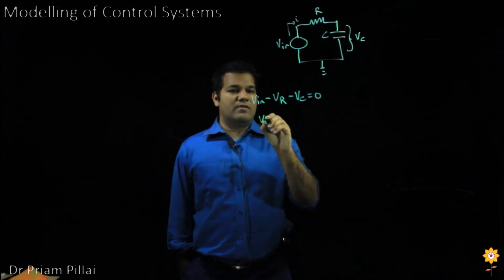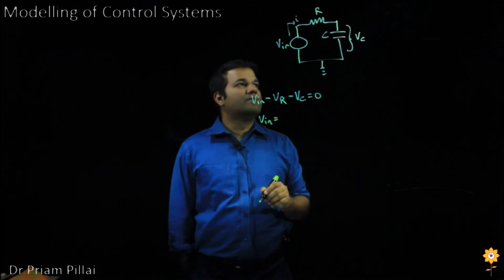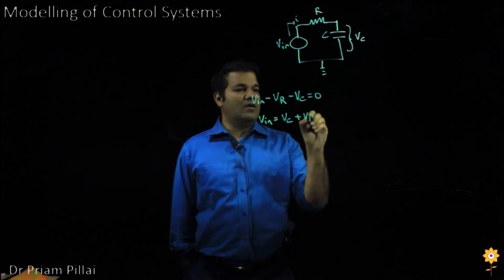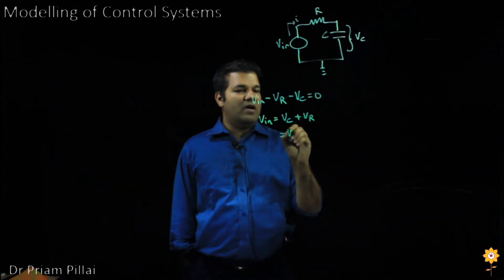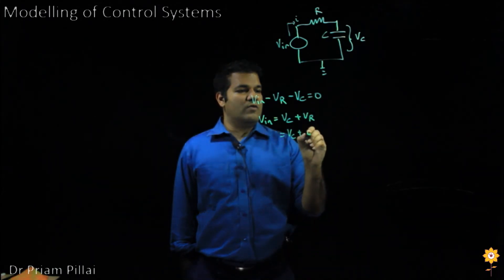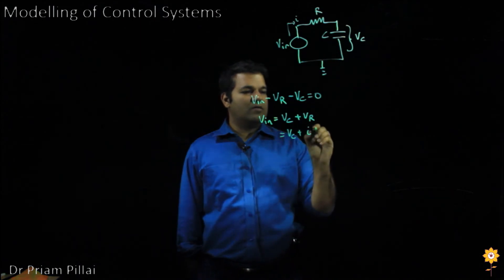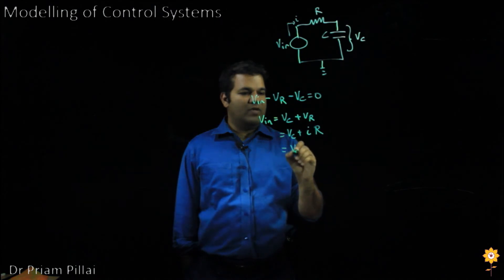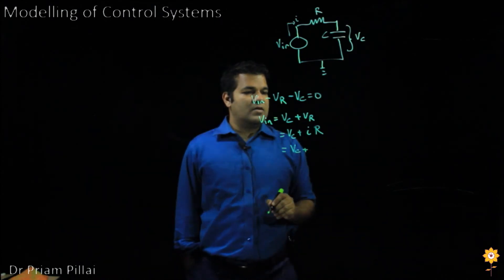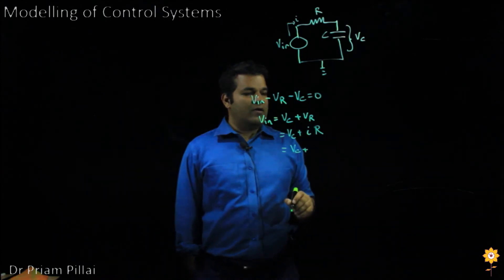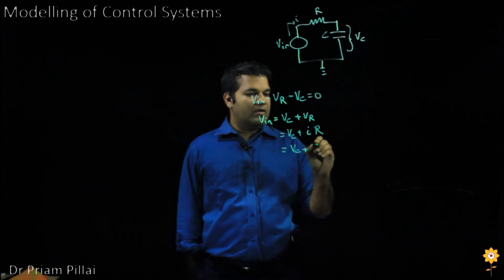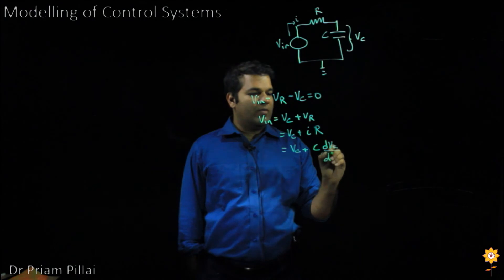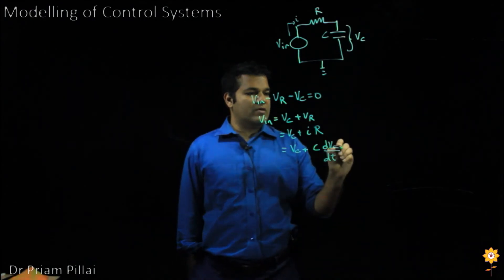So V in equals V R plus V C. And V R, as per Ohm's law, will equal the current times the resistance. For a capacitor, the current will be given by the capacitance multiplied by the derivative of the voltage across the capacitor.